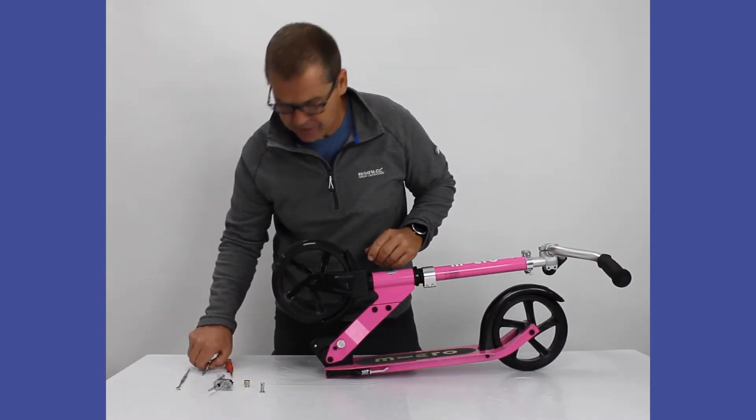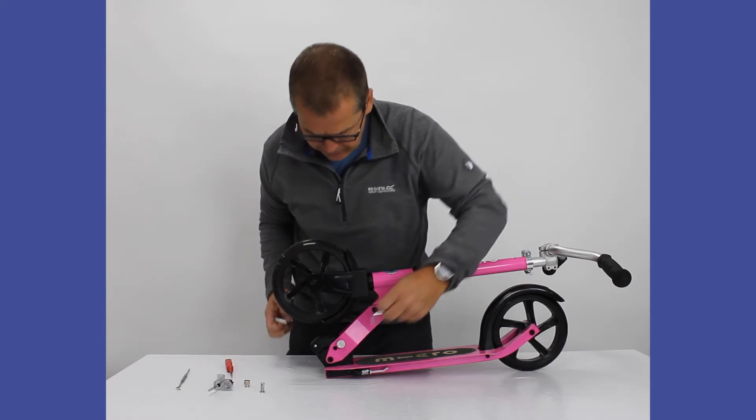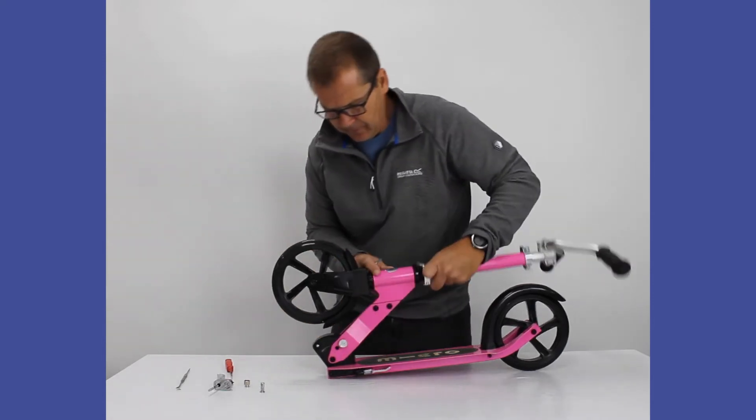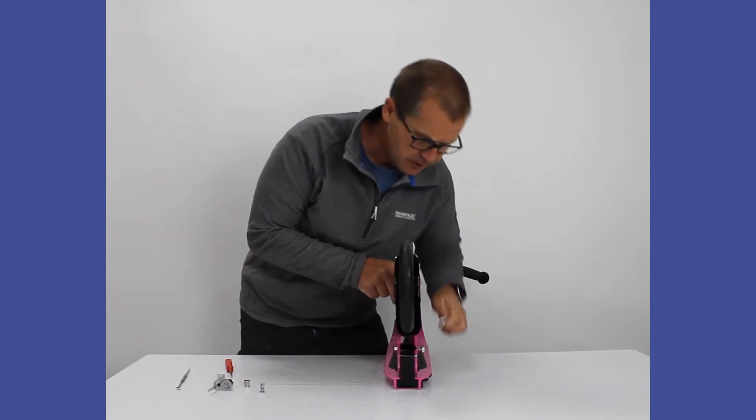Now what we need to do is, using the two allen keys that came with the scooter itself, is remove this axle bolt here, and it bolts to itself. So there's one on the inside.